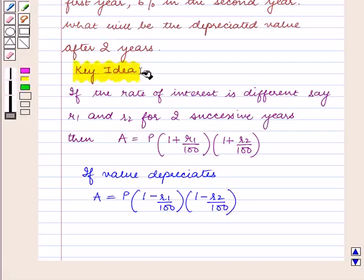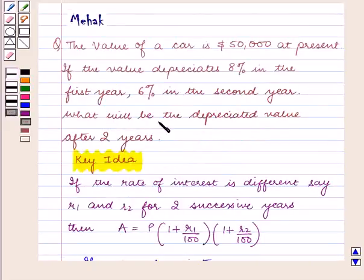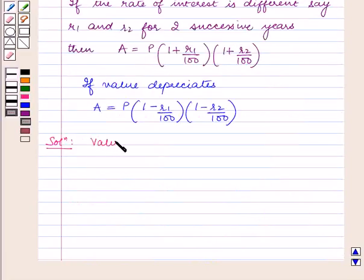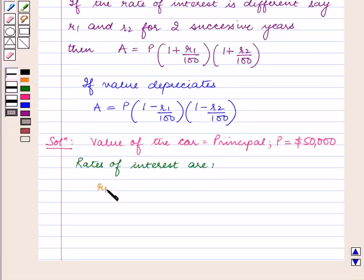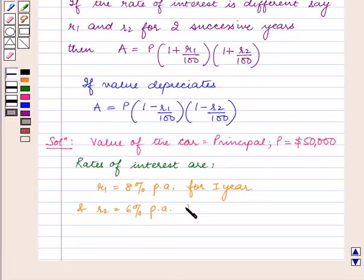With this key idea, let us proceed with the solution. According to the question, we have to find the depreciated value of a car after 2 years. The present value of the car is $50,000, so let P equal $50,000. The rates are R1 equal to 8% per annum for the first year and R2 equal to 6% per annum for the second year.